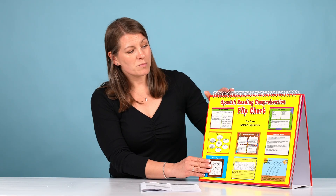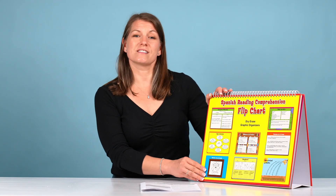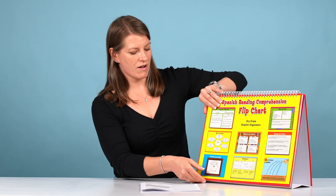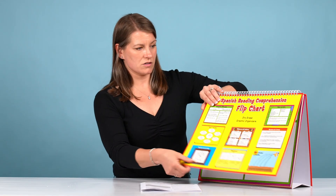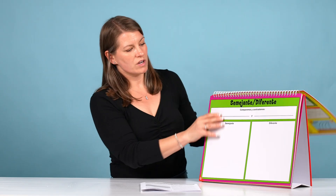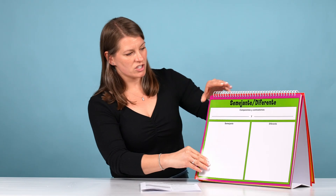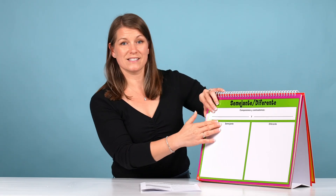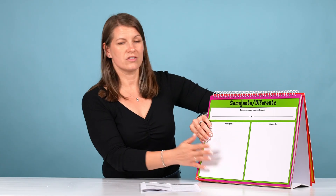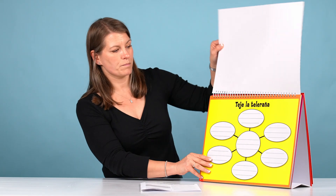This book features 16 different graphic organizers. It covers topics in reading comprehension, like similarities and differences. So you can compare characters, compare two different texts. There are many ways you can use this.